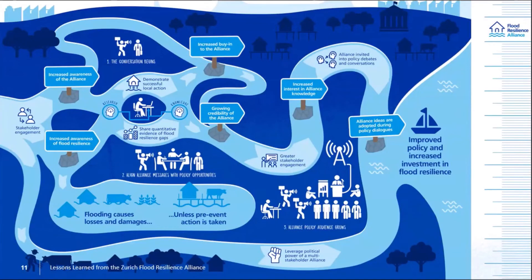Where are we progressing? What does that progress look like, and what has it taken to affect the change that we're seeing? In the year two learning report we generated this graphic to encapsulate what we were seeing in the reporting around how we are achieving change and how we're influencing policy and funding.